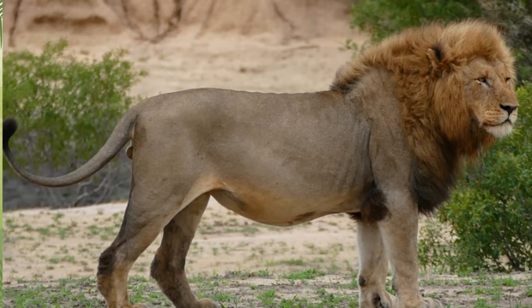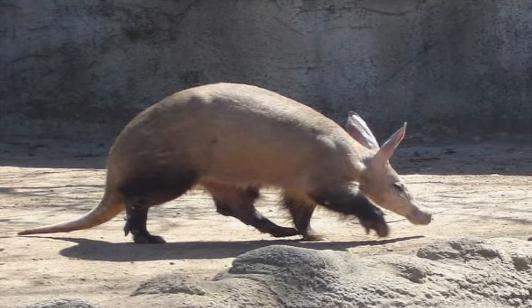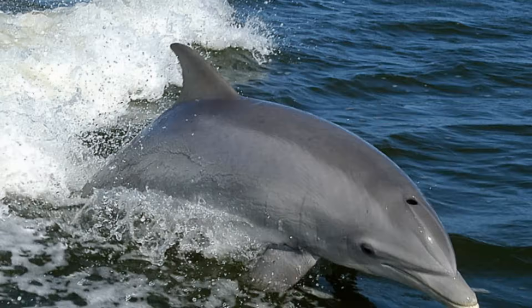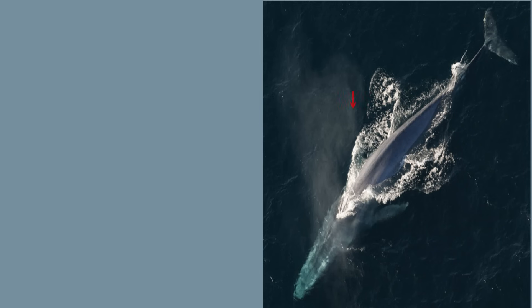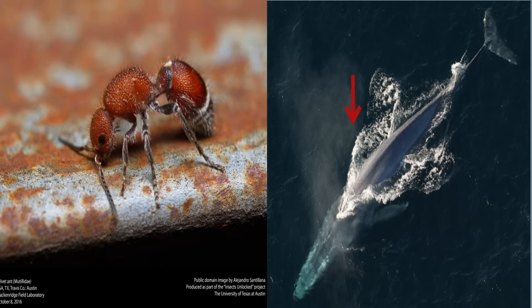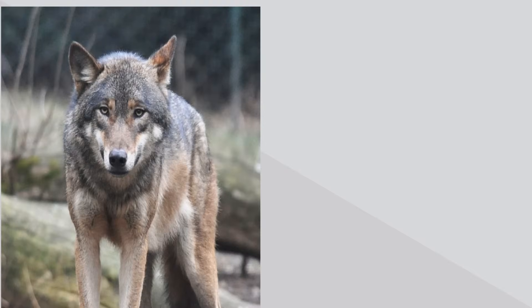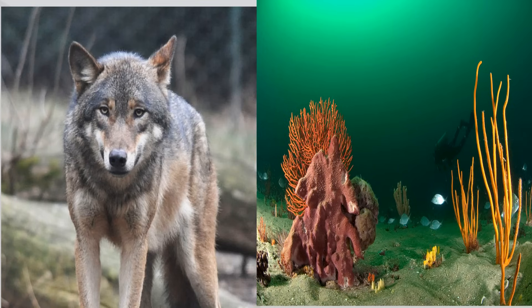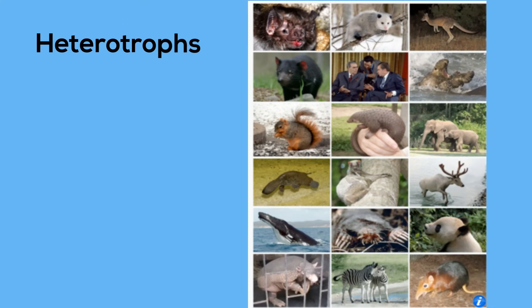The animal kingdom is an extremely diverse group of individuals. Some animals are giant like the blue whale, where others are tiny like an ant. Some have a complex nervous system and are intelligent, where others are simple like a sponge. Here are some common traits.